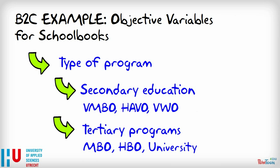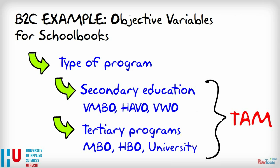Based on these variables, it is possible to determine the total number of potential customers — that is, the total available market — which is the sum of the total number of students per program type.